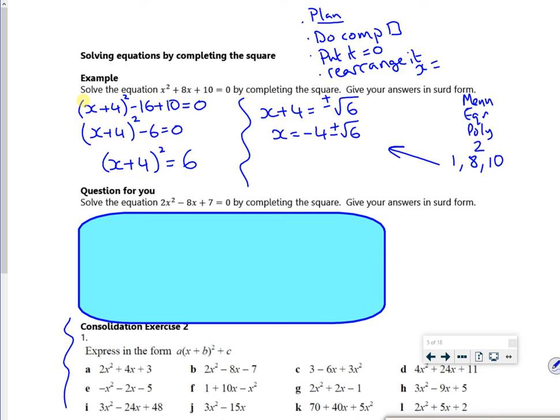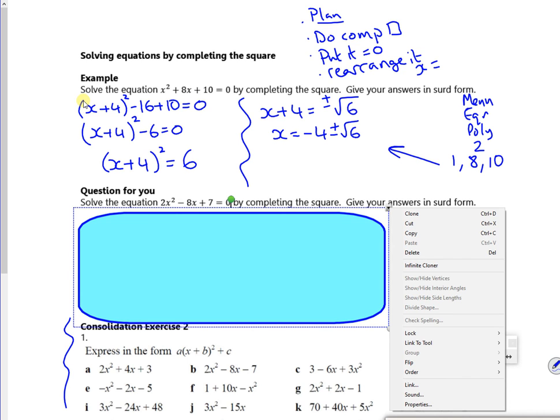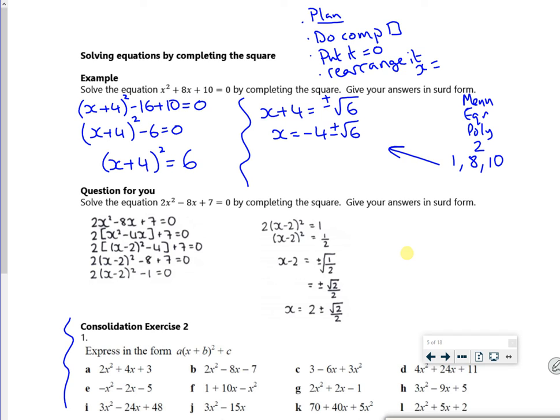Right, question for you, but it's a harder one. You've got to take the two out first. So that's in the mix somewhere. There you go, so take the two out, gives you that for completing the square, and then when you do the rearrange, you have the half.